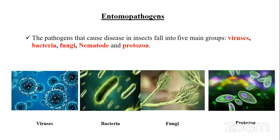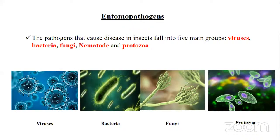What is an entomopathogen? The pathogen that causes disease or death in a particular insect is called an entomopathogen. This entomopathogen is very target-specific — it is only toxic and virulent to particular insects, not to other species such as humans, animals, or others. Only target-specific toxicity to insects.